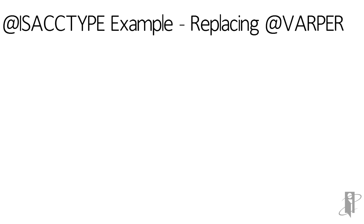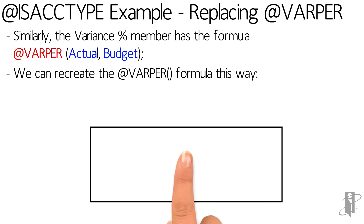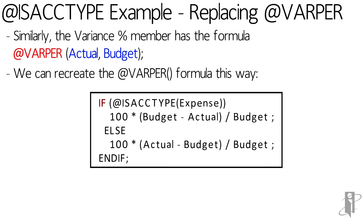Or let's say we wanted to replace the variance percentage function. We could do that by saying if isAccountType expense, then we want 100 times budget minus actual divided by budget. Or if it's a non-expense account, we want to do 100 times actual minus budget divided by budget.